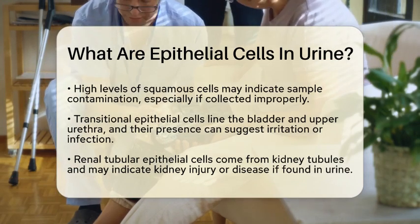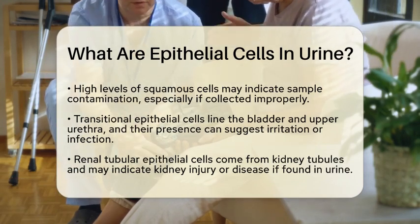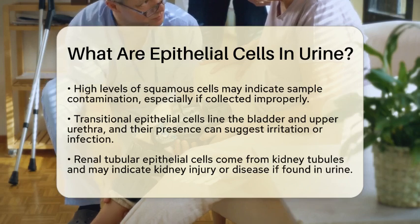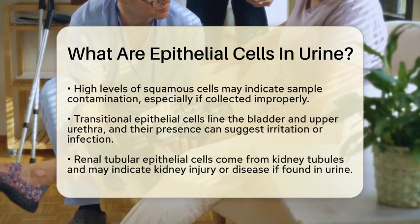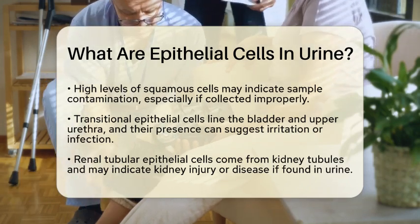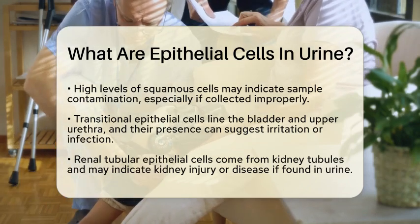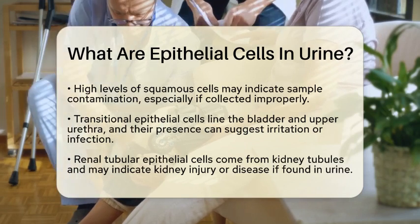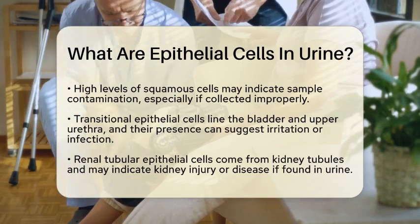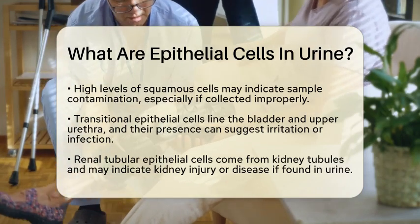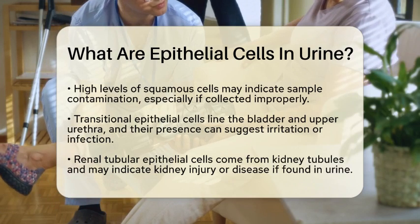The third type is renal tubular epithelial cells. These cells come from the tubules in the kidneys, which play a key role in filtering blood and forming urine. If you find these cells in urine, it could be a sign of kidney injury or disease.